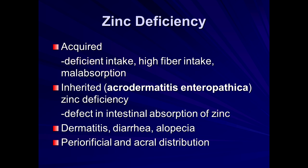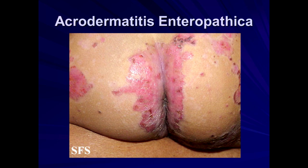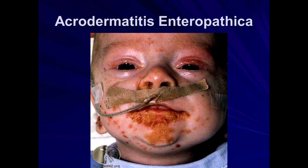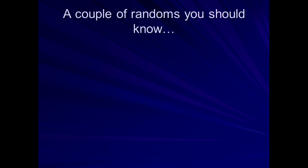Zinc deficiency patients get ulcers, plaques, and various other problems with predilection for the arms and legs — acrodermatitis enteropathica. The nice thing is this resolves very quickly with zinc supplementation. But unless you're thinking about it, it can go on and on, the patient gets sicker and sicker. If it's in the differential and a zinc level is obtained, it can be very nicely fixed.